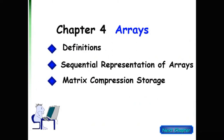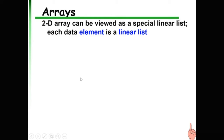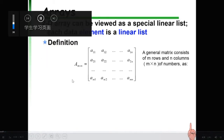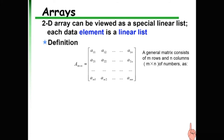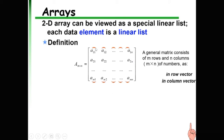In chapter 4, let's study two-dimensional or multi-dimensional arrays, sometimes called a matrix. A two-dimensional array can be viewed as a special linear list where each data element is itself a linear list. A general two-dimensional array consists of m rows and n columns. It can be viewed as a row vector where each row is one element, giving a linear list of length m, or as a column vector with n elements.